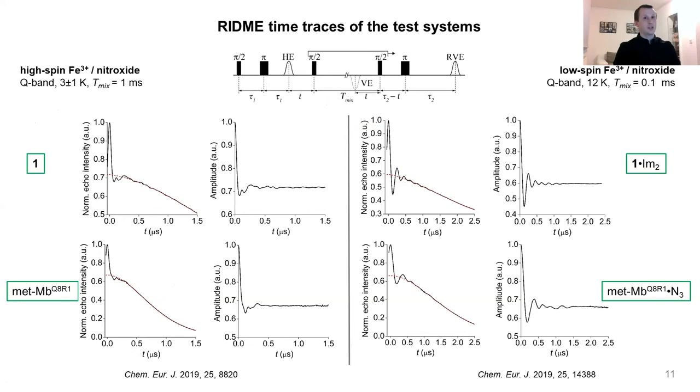Next, we did the five-pulse RIDME experiments on them. All experiments were done at Q-band. It turned out that the temperature of 3 Kelvin was optimal for the high-spin iron, whereas 12 Kelvin was optimal for the low-spin iron. After a few hours of measurement, we could already get quite good signal-to-noise ratio. After the background correction, which is shown by a red dashed line here, you can see that we get time traces with modulation depth of 30 to 40 percent, which is fairly good modulation depth.